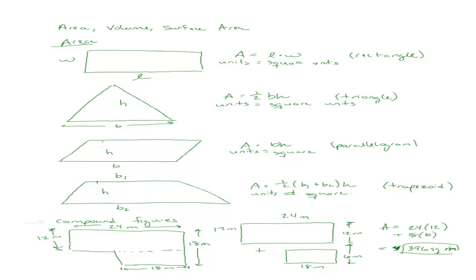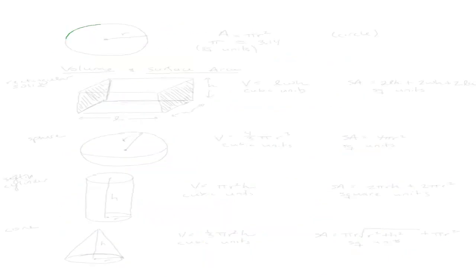For any compound figure, just break it up into shapes you know and work with those. We can also find the area of a circle. If you have a circle with radius r, the area is π r squared. Remember that π is about 3.14, and as always the area is in square units.